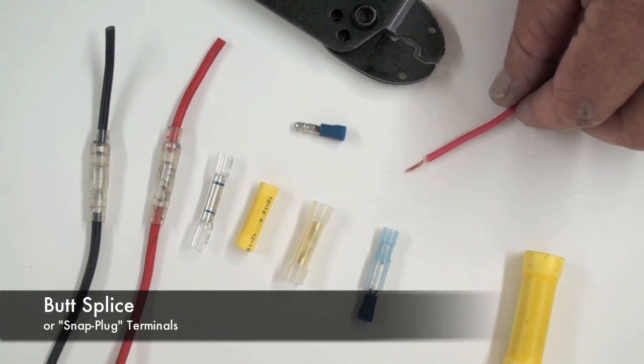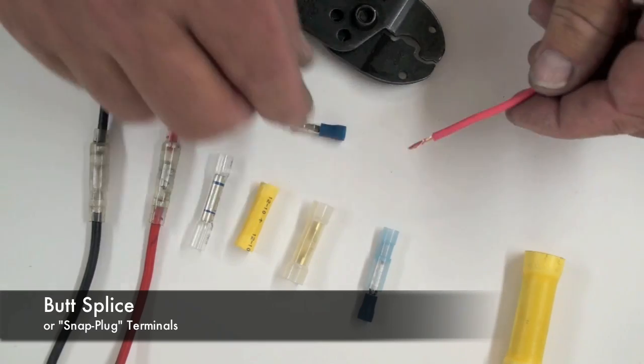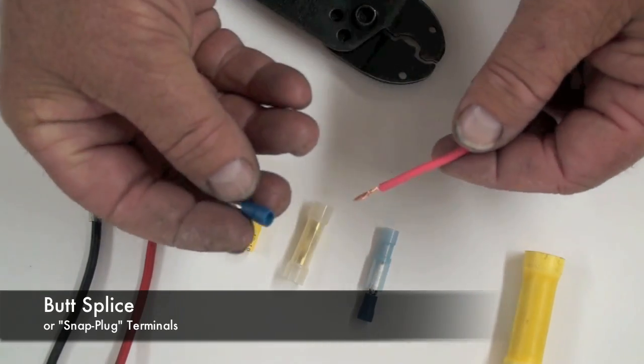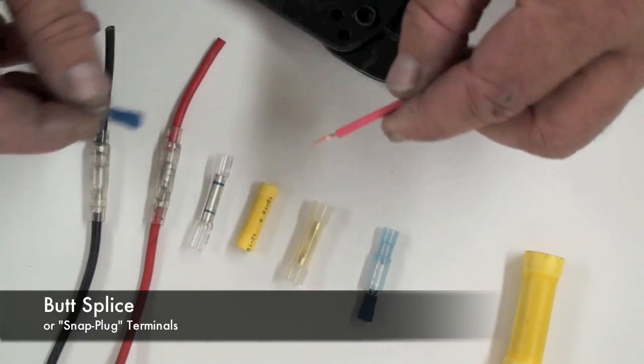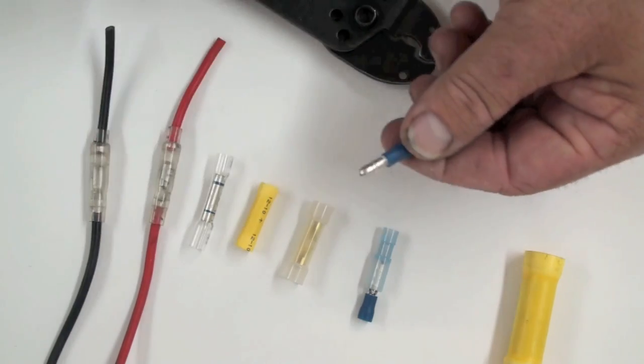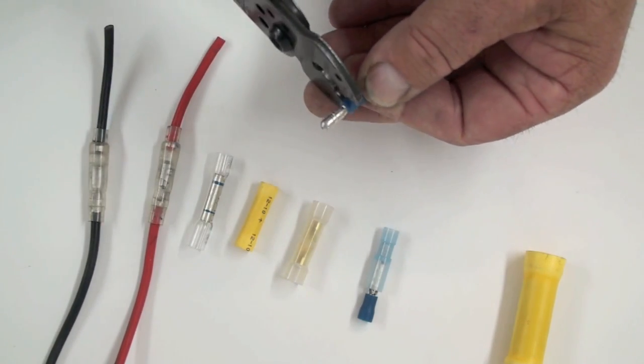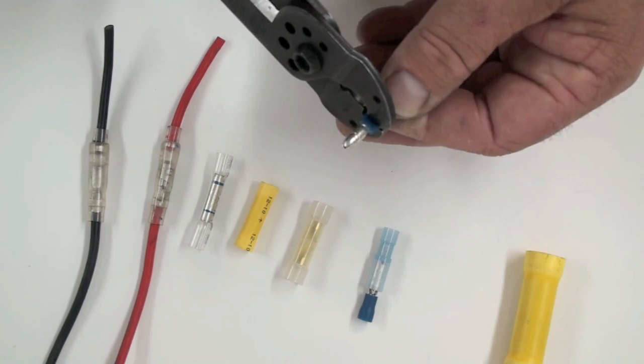To use these, you would simply crimp them on. All you have to do is choose the appropriate color and gauge for your wire, in this case 16 gauge. Strip off some insulation and using the crimping tool, crimp it.